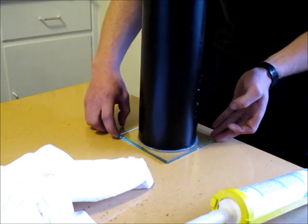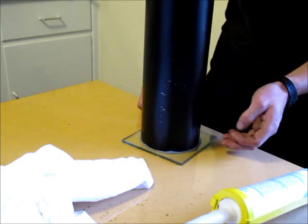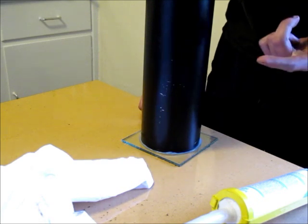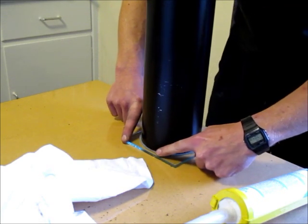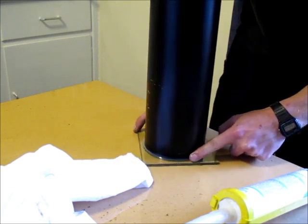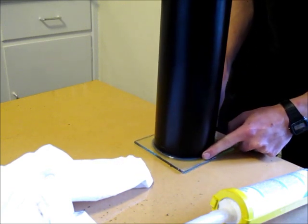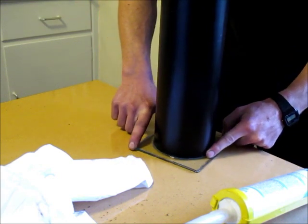Then you want to smooth the silicon out so you have a nice finish. So just wet your finger and smear and turn the base as you go along.